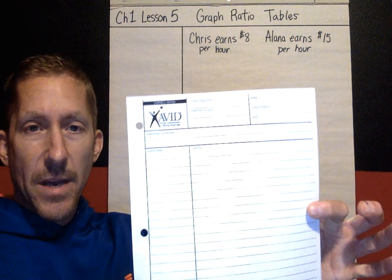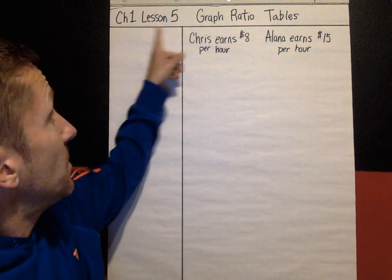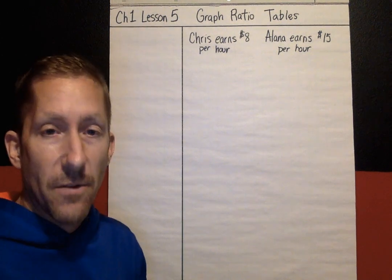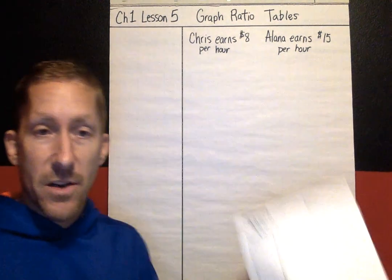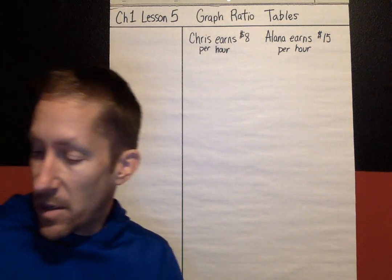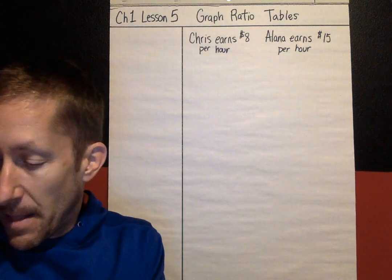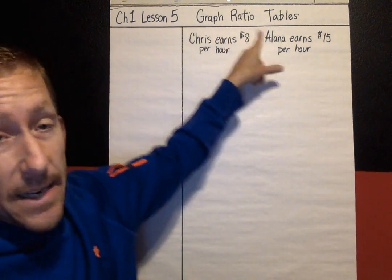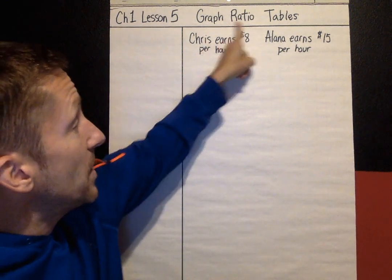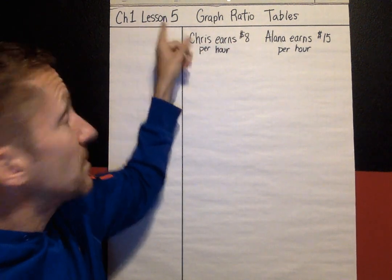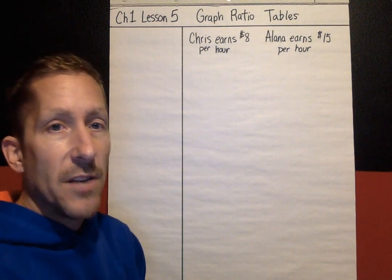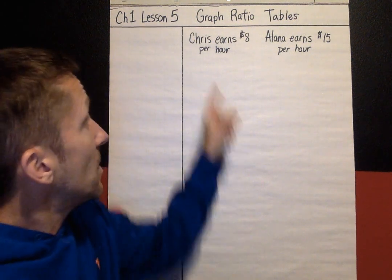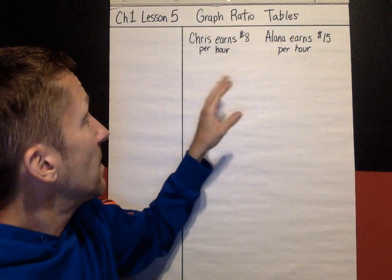You will need a Cornell Note page or your comp book. Whenever you see these lines in the Cornell Note format, you know that you are following along either on your note page or in your comp book. One thing I've noticed is that not every kid is writing down the heading and what lesson it is. Make sure you're putting the topic up here so you know what order your notes go in. Chapter 1, Lesson 5: Graph Ratio Tables.